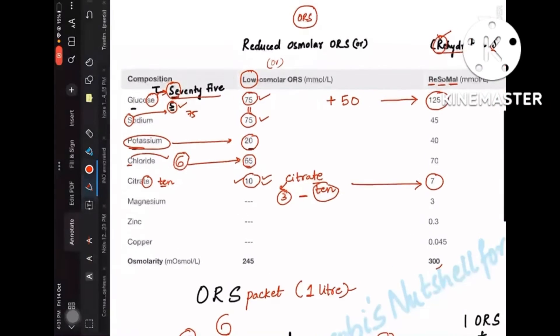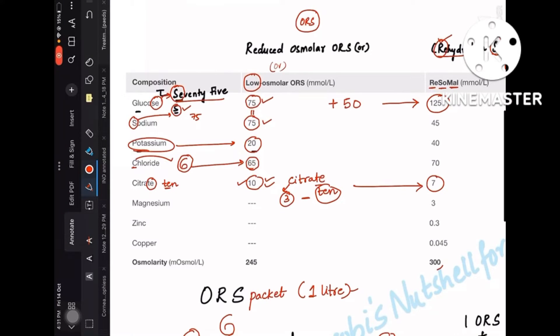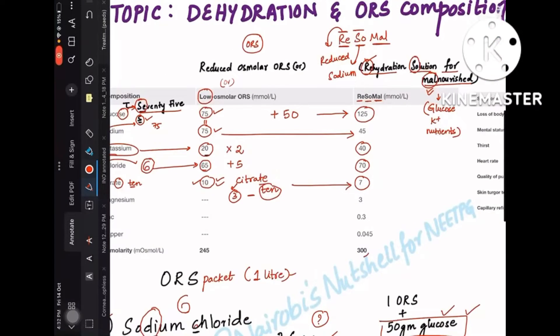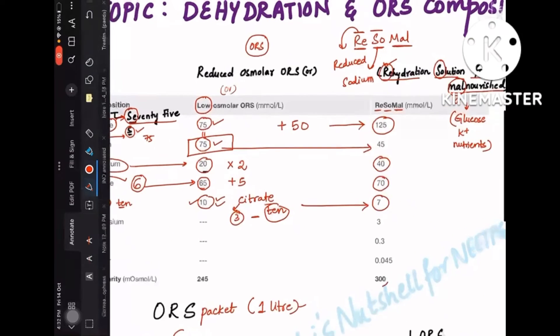Now, coming to the values which increase: potassium increases—that is, it doubles—and chloride you have to add 5, that is 70 and 40. When you discuss about sodium, let's remember this ReSoMal. The actual name is rehydration solution for malnourished. Let's remember it like reduced sodium—that mnemonic of reduced sodium. So in ReSoMal solution you will have reduced sodium compared to the low osmolar ORS. So here it is 75, you have to reduce it. So you have to reduce it by 30, which is 45.